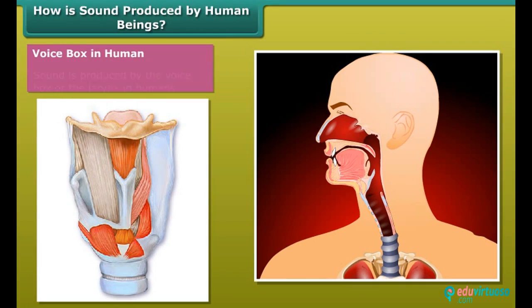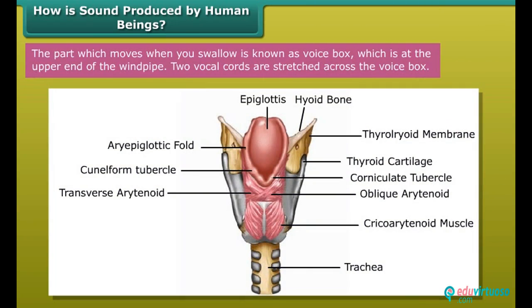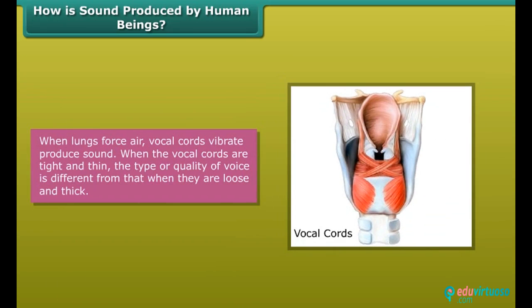Sound is produced by the voice box or the larynx in humans. The part which moves when you swallow is known as voice box, which is at the upper end of the windpipe. Two vocal cords are stretched across the voice box. When lungs force air, vocal cords vibrate, producing sound. When the vocal cords are tight and thin, the type or quality of voice is different from that when they are loose and thick.